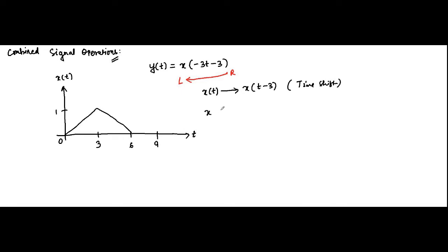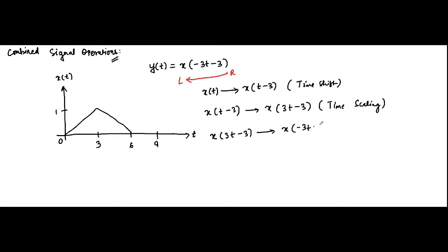Moving right to left, this expression can be broken down into: first, x(t) to x(t-3) which is time shifting; then x(t-3) to x(3t-3) which is time scaling; then x(3t-3) to x(-3t-3) which is time inversion or time reversal. These are three individual signal operations. In the previous question we had time shifting and time scaling; here there is an extra operation — time reversal.